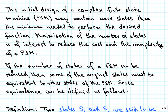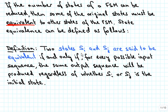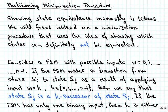If the number of states of a finite state machine can be reduced, then some of the original states must be equivalent to other states. We can define state equivalence as follows: two states Si and Sj are said to be equivalent if and only if, for every possible input sequence, the same output sequence will be produced regardless of whether Si or Sj is the initial state. Using this definition is not entirely practical because it requires a lot of work, so we will focus on a different minimization procedure that uses the idea of showing which states can definitely not be equivalent.